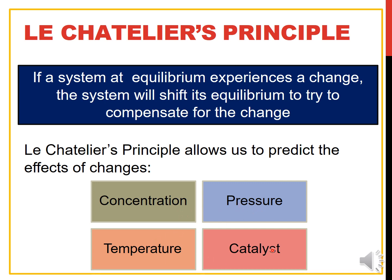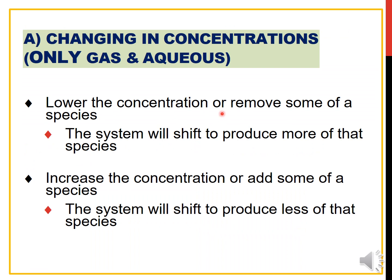The stresses are concentration, pressure, temperature, and addition of catalyst. For the first change — changing in concentration — that is applied only for gas and aqueous solutions. There are two criteria: if you lower the concentration of a species, the system will shift to produce more of that species; and if you increase the concentration of a species, the system will shift to produce less of that species.